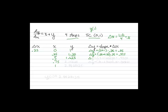Then we do this step again. We have 0.5 for our x value plus 1.625 for our y value, times 0.25. That gives us a delta y of 0.53125. Adding that to our old y value of 1.625, we have a new y value of 2.15625.